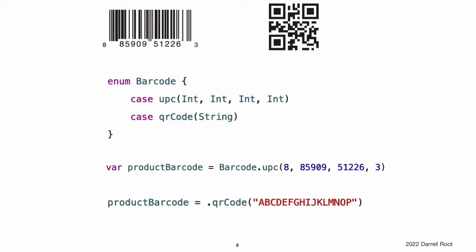You can then create new barcodes using either type. This example creates a new variable called productBarcode and assigns it a value of Barcode.upc with the tuple (8, 85909, 51226, 3). You can then assign the same product a different type of barcode. At this point, the original Barcode.upc and its integer values are replaced by the new Barcode.qrCode and its string value. Constants and variables of type Barcode can store either a .upc or a .qrCode together with their associated values, but they can store only one of them at any given time.